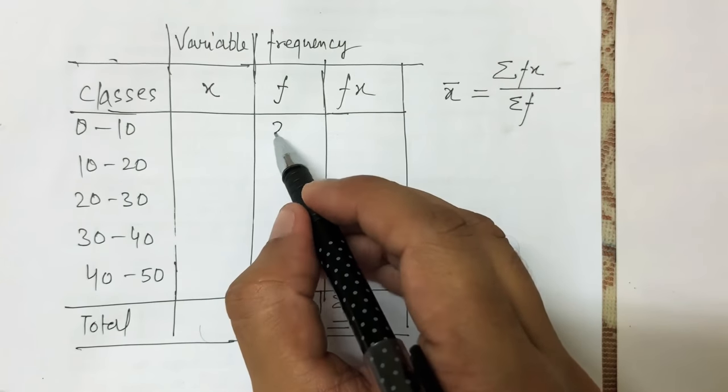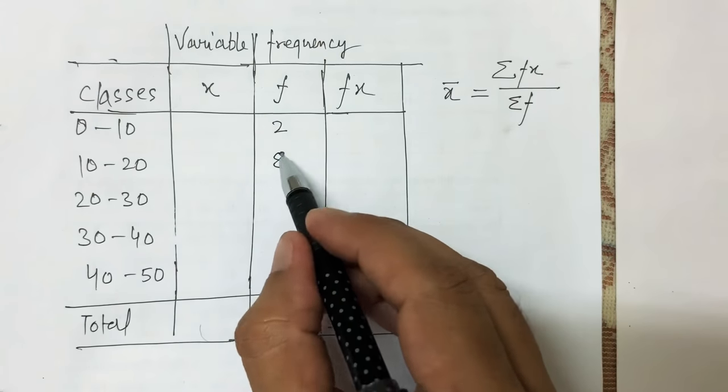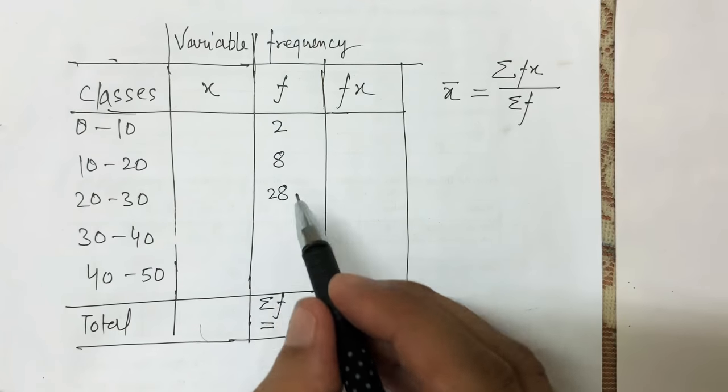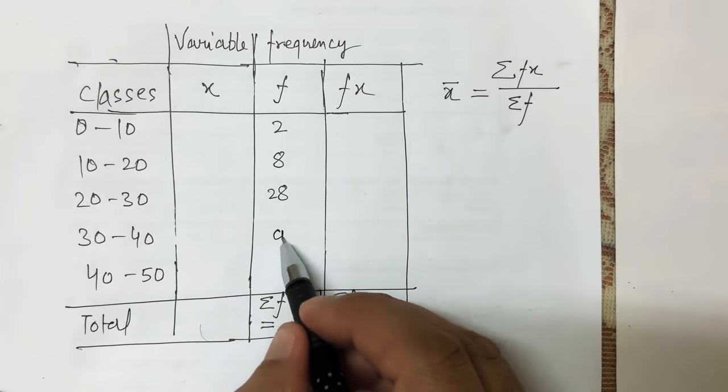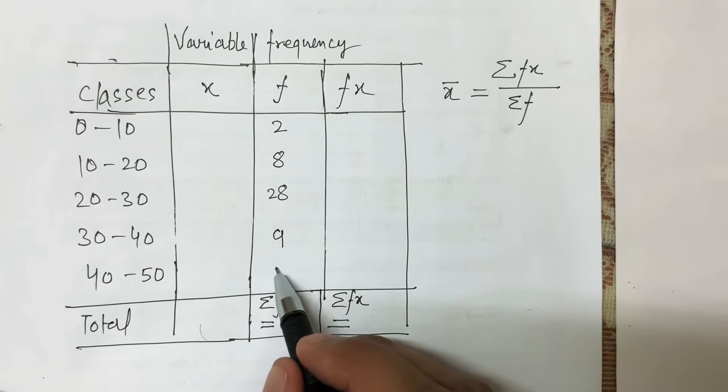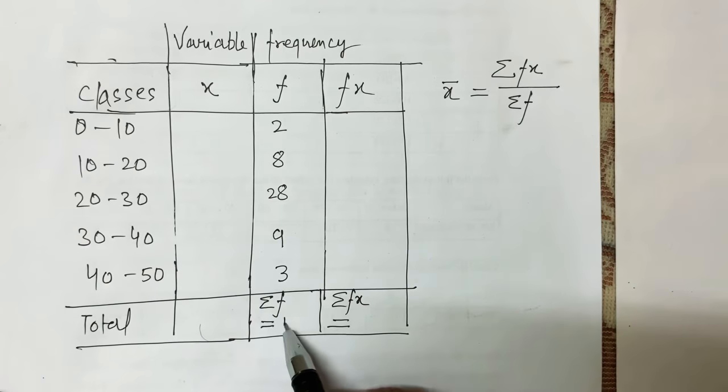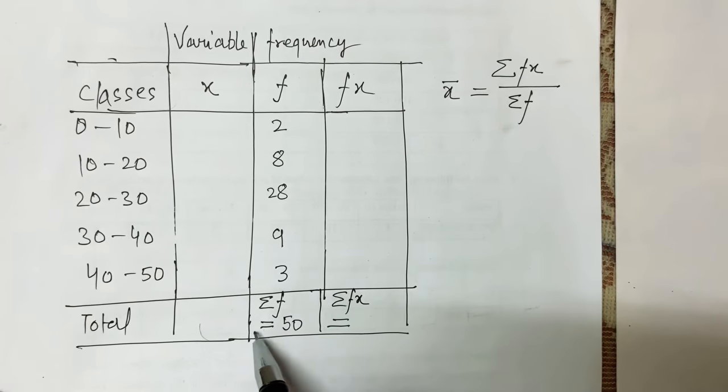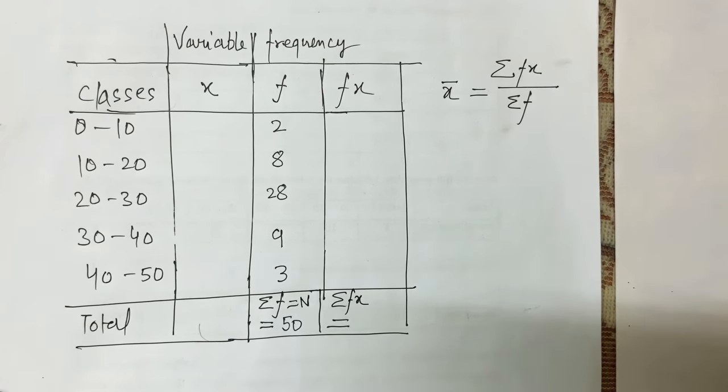The frequencies are: 2 students scoring between 0 to 10, 8 students between 10 to 20, 28 students between 20 to 30, 9 students between 30 to 40, and 3 students between 40 to 50. This gives me a total of 50 students, which is the summation of f, also represented by capital N, the total number of observations in the data set.